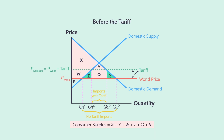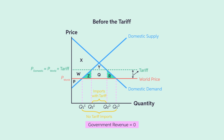Before the tariff, the consumer surplus equals the area of X plus Y plus W plus Z plus Q plus R. The producer surplus equals area P, government revenue is zero, and the total surplus equals the area of X plus Y plus W plus Z plus Q plus R plus P.